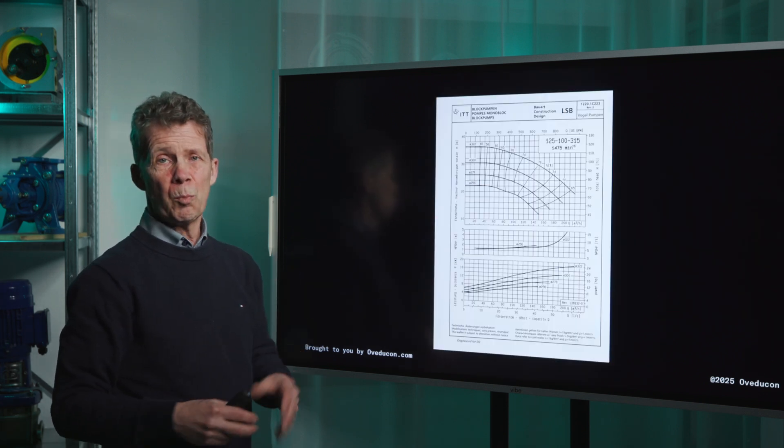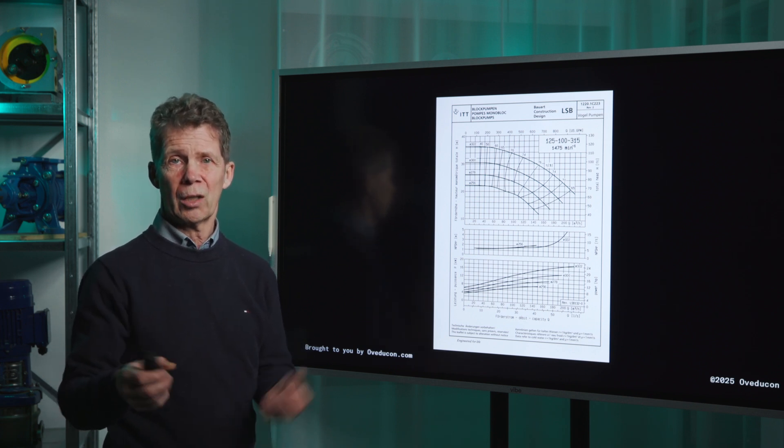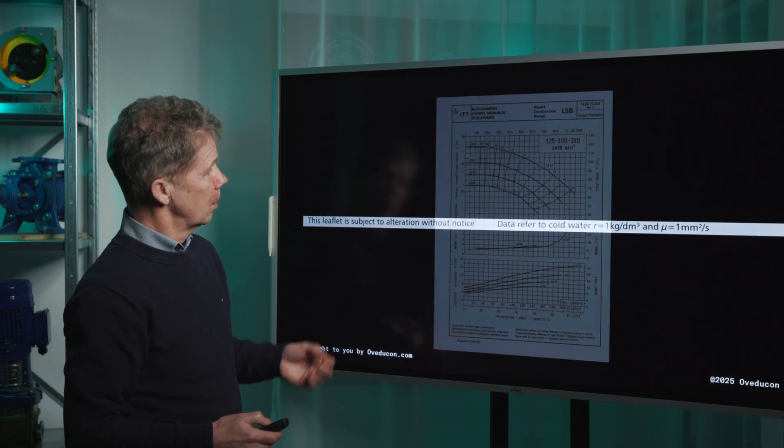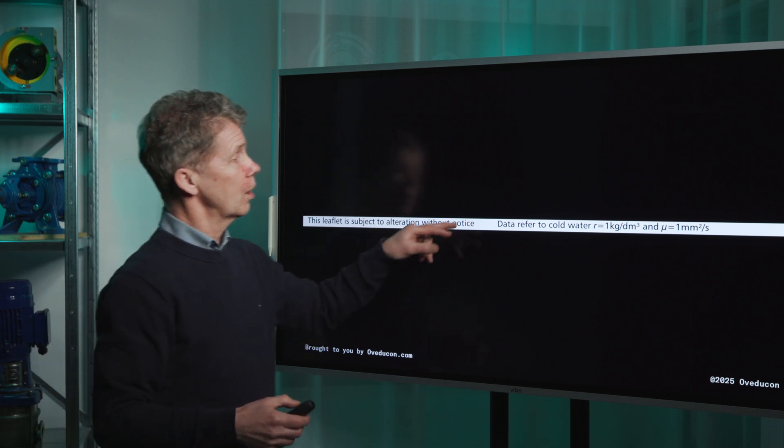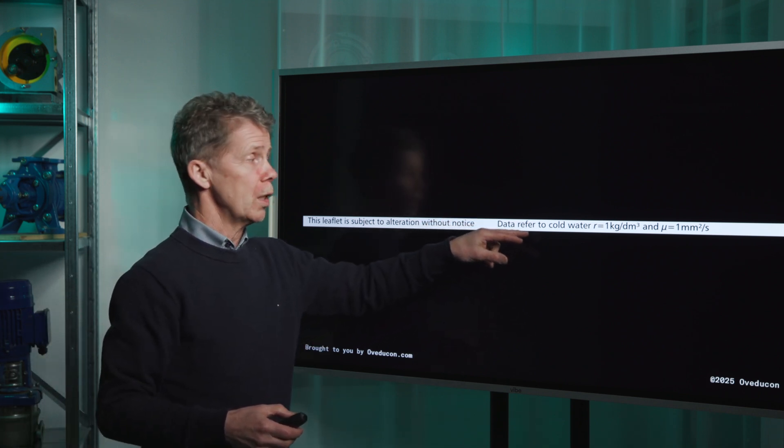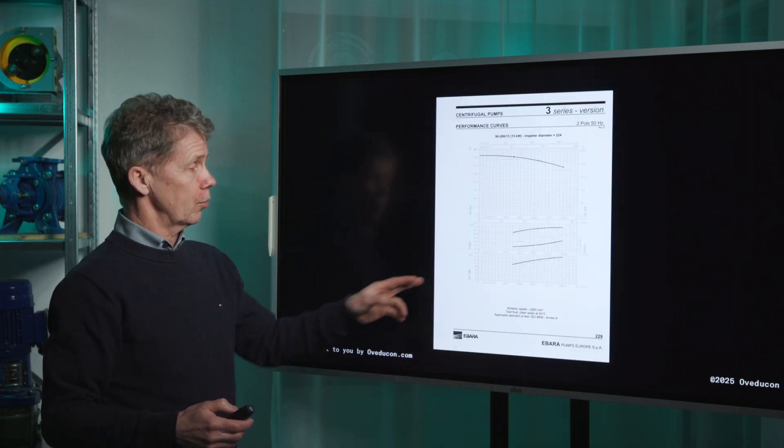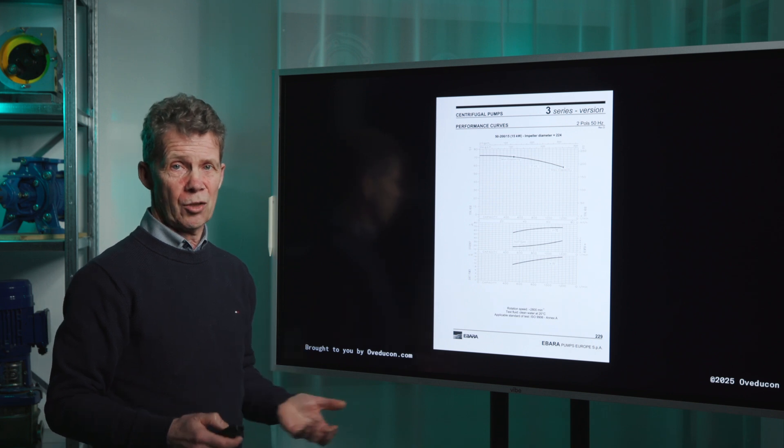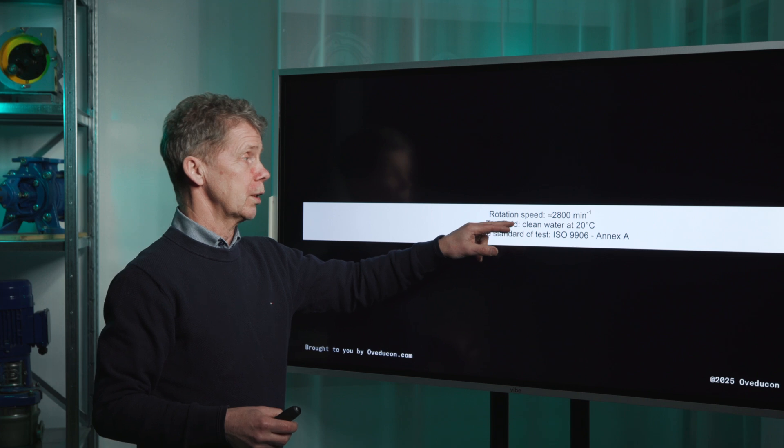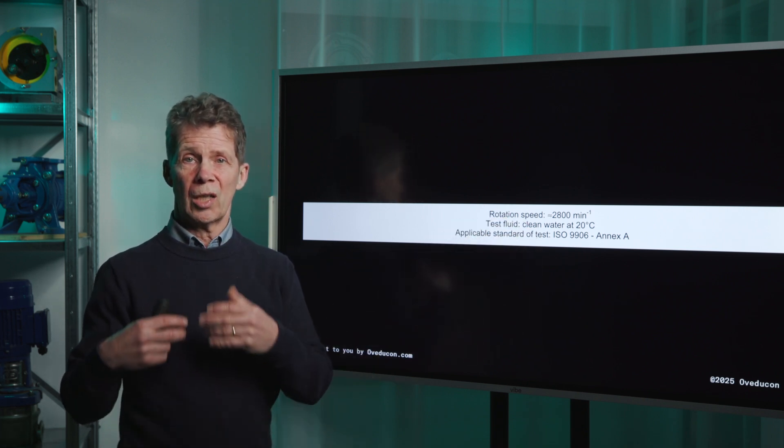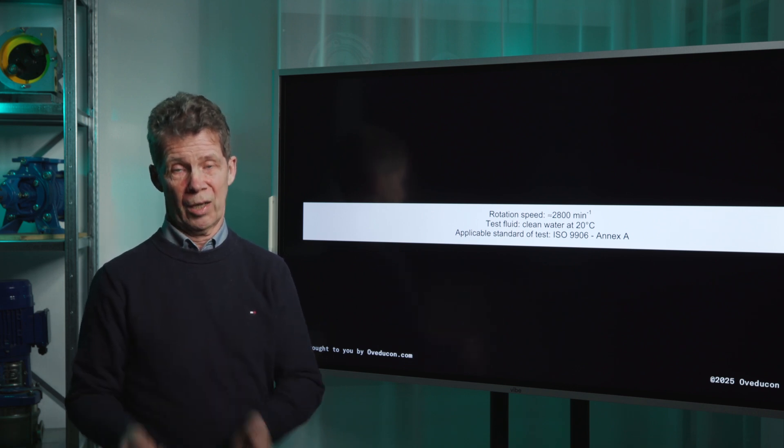This pump curve is made for a certain medium. Always, you always have to check this medium. There's a little line underneath this pump curve and it says that this pump curve is made for cold water. If we take another pump curve like this one, they added some extra information. They say it's not only clean water, but they also say it's at a temperature at 20 degrees Celsius or 68 degrees Fahrenheit.